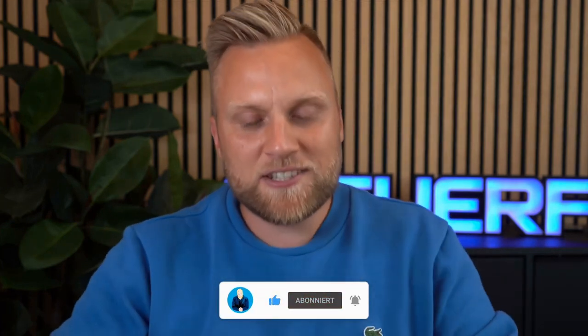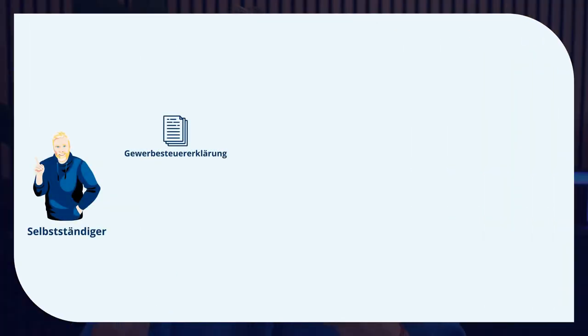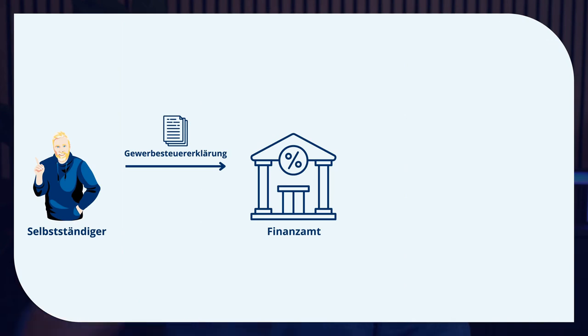We will log into Elster Online together, and I will take you along on the screen as we click through the trade tax declaration step by step. But before we do that, let's cover a little bit of theory. After we create the trade tax declaration online via Elster and click send, it goes to the tax office, which then determines the trade income — the profit — and calculates the trade tax assessment amount.